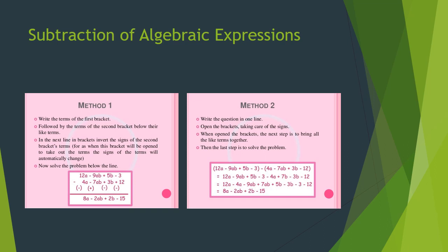Similarly, using the horizontal method: (12a minus 9ab plus 5b minus 3) minus (4a minus 7ab plus 3b minus 12). Opening the bracket: 12a minus 9ab plus 5b minus 3 minus 4a plus 7ab minus 3b plus 12. Adding the like terms together, we get 8a minus 2ab plus 2b minus 15.